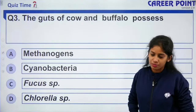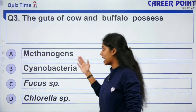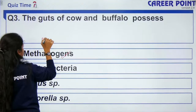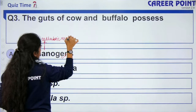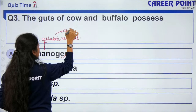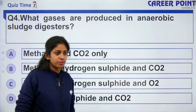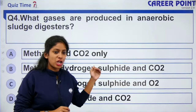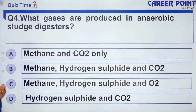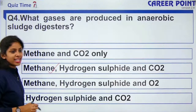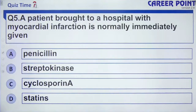The gut of the cow and buffalo possesses methanogens. They act on cellulosic material and the byproducts are methane, carbon dioxide, and H⁺ ions. Question: what gases are produced in anaerobic digestion? The answer is option B — methane, hydrogen sulphide, and carbon dioxide. A patient brought to hospital with myocardial infarction is immediately given streptokinase as a clot buster — that is option B.